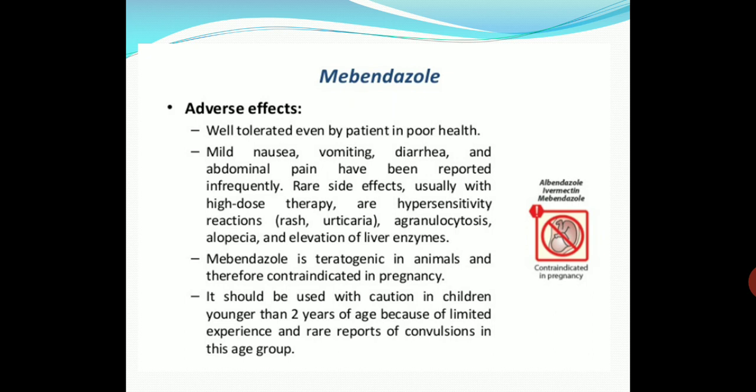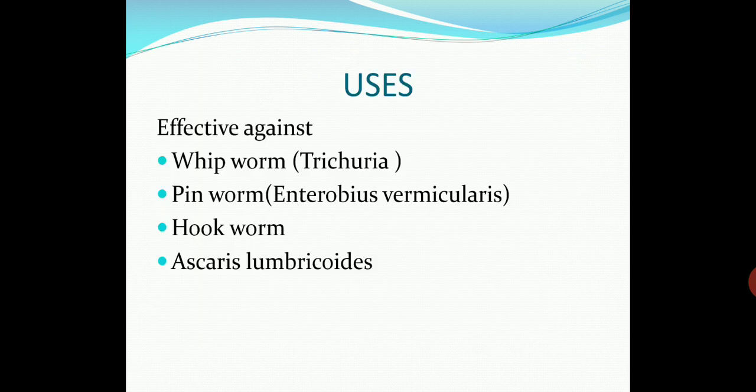Mebendazole is teratogenic in animals and therefore contraindicated during pregnancy. It should be used with caution in children younger than two years of age because of limited experience and rare reports of convulsions in this age group. Uses: it is effective against whipworm (Trichuris), pinworm (Enterobius vermicularis), hookworm, and Ascaris lumbricoides.